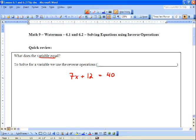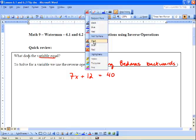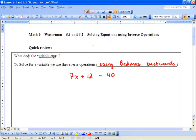So to solve for a variable, we use the reverse operations. And this is kind of like using BEDMAS backwards. That's pretty cool. So we ask ourselves, what do we need to do to get x by itself? There's a few things first.